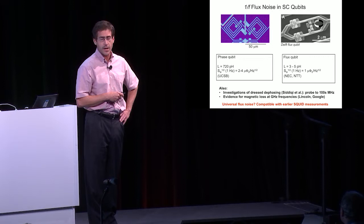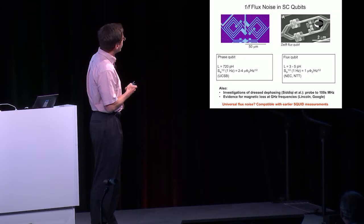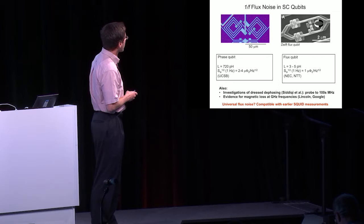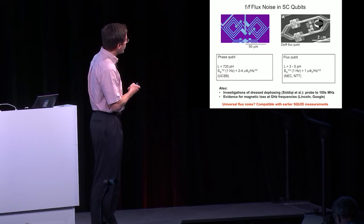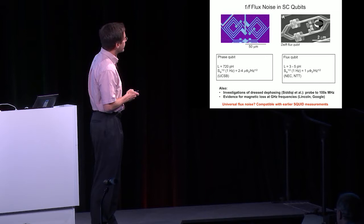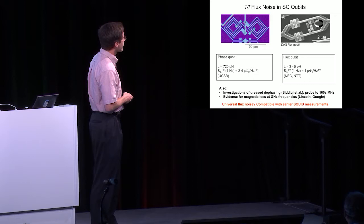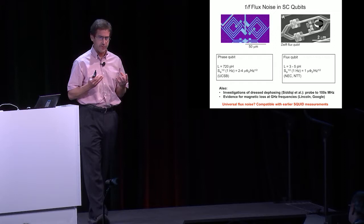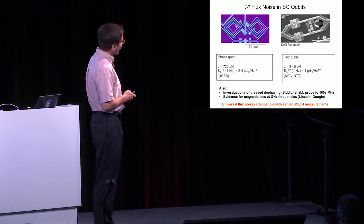If you take a qubit and create some superposition state 0 plus 1, the phase coherence is lost on a short time scale due to low frequency flux noise. The same levels were seen in very different devices. Here's a phase qubit we studied in Santa Barbara. We backed out a 1 over f flux noise magnitude of a few micro phi naught per root hertz at 1 hertz.